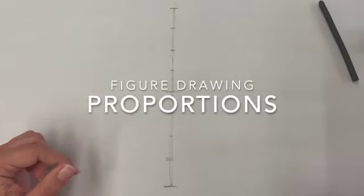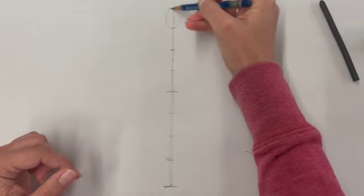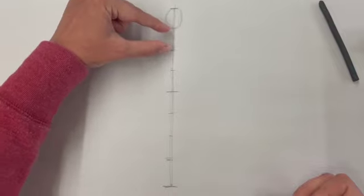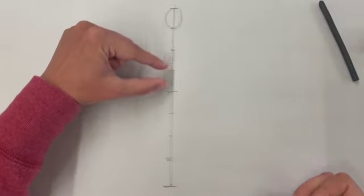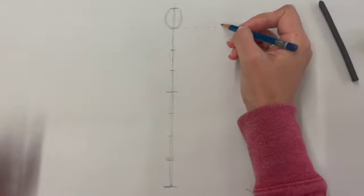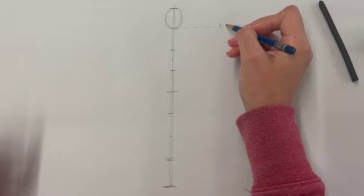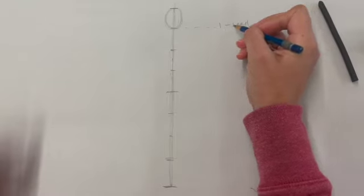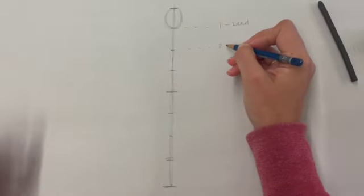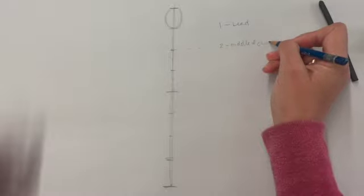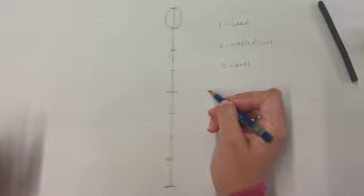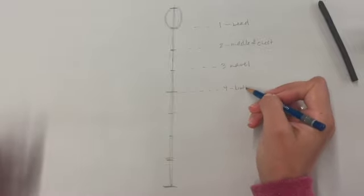We're going to move on to some longer poses but before we do I want to take a moment to talk about the proportions of the figure. I have here a center line that I've divided into eight equal segments. Each segment is the length of one head. We can use the head as a unit of measurement to identify some key proportions within the body. The first head measurement obviously contains the head. Two heads down is the middle of the chest. Three heads is the navel.